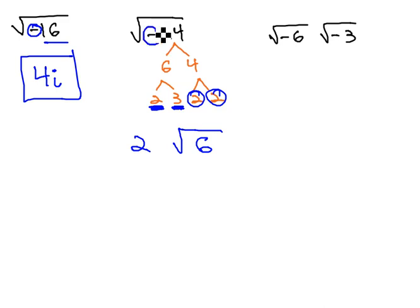But what about the negative? If there's a negative under the radical, it can always come out of a square root as an i. The square root of negative 24 is 2i times the square root of 6.